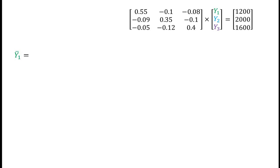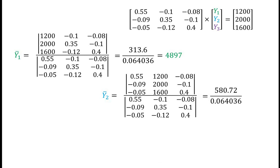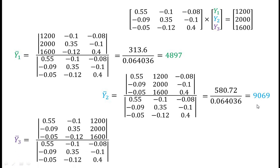That is, Y1 bar is equal to 313.6 divided by 0.064036, which equals 4897. And the value of Y2, that is Y2 bar, is found as 9069.